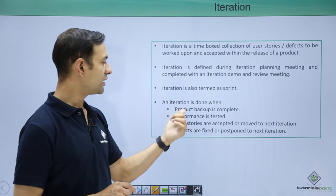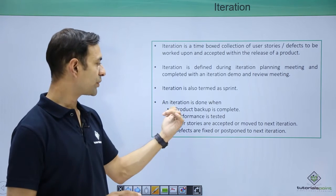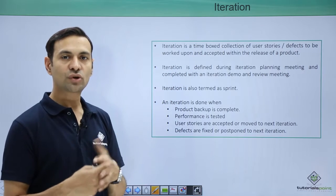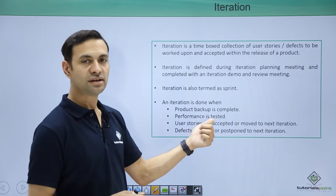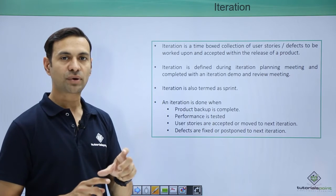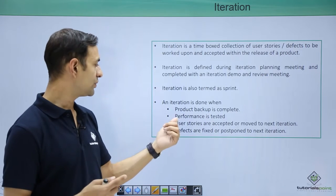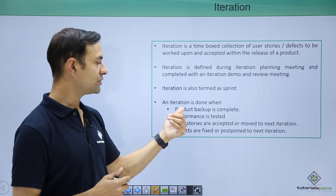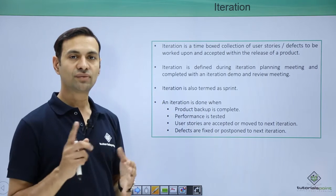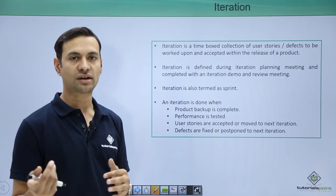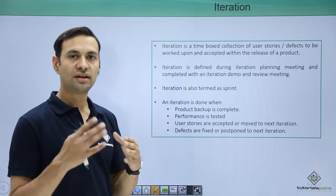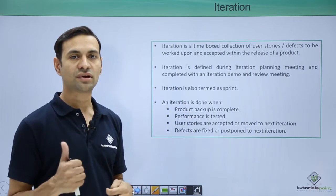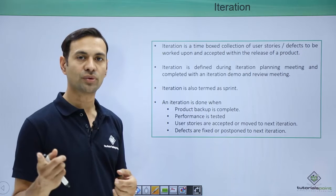Iteration is defined during iteration planning and completed at iteration done, where review meetings are held. An iteration is done when certain criteria are met: the product backlog is complete, performance is tested to check whether we are meeting the required performance criteria, and user stories enclosed within the iteration are accepted. If not accepted, they should be moved to the next iteration.